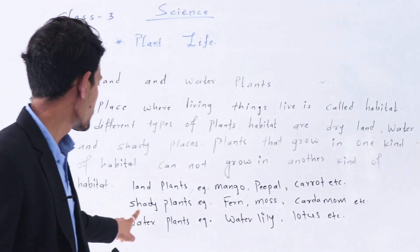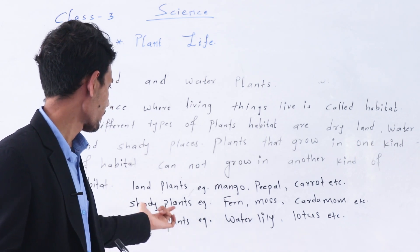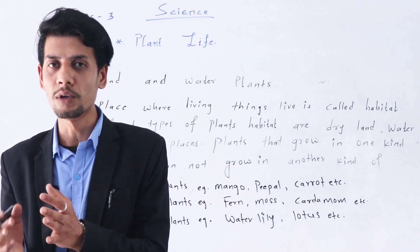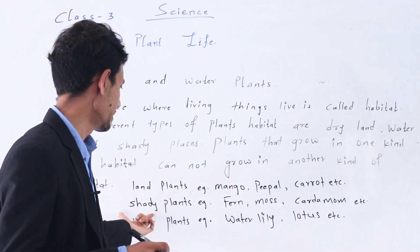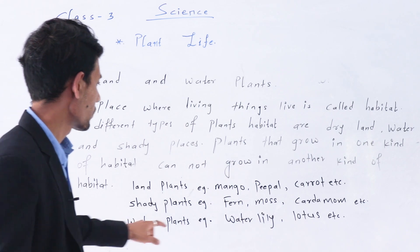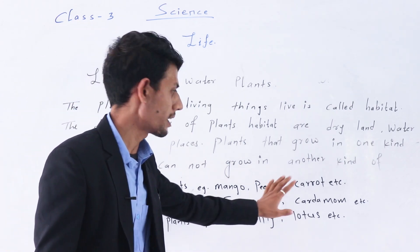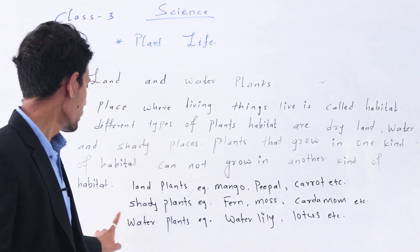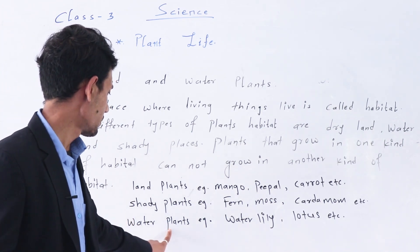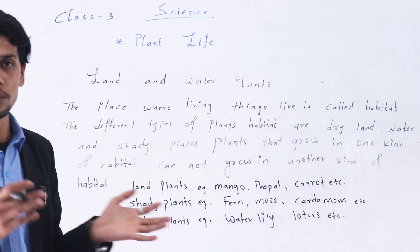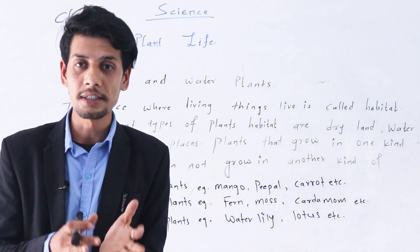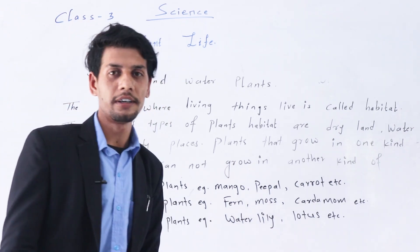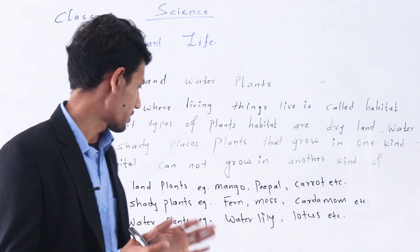Likewise, shady plants — examples are fern, moss, cardamom, etc. These are examples of shady plants. Similarly, water plants — examples are water lily, lotus, etc. These are the water plants.